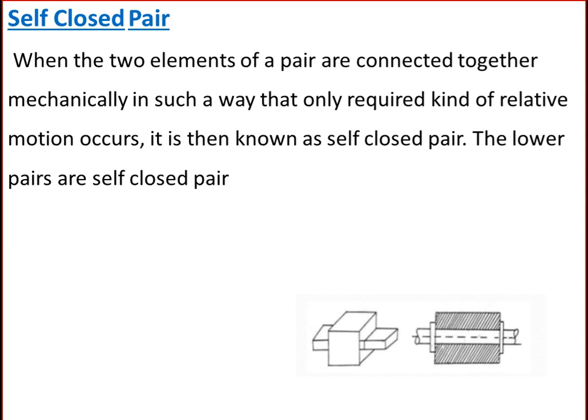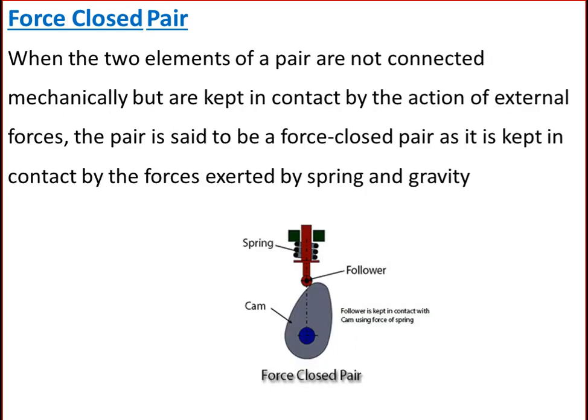Kinematic pairs according to the type of closure are classified as self-closed pair and force-closed pair. When two elements of a pair are connected mechanically such that only the required kind of relative motion occurs, it is known as a self-closed pair; lower pairs are self-closed pairs. When two elements are not connected mechanically but are kept in contact by external forces — such as forces exerted by a spring or gravity — the pair is said to be a force-closed pair.